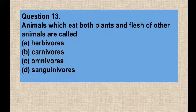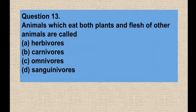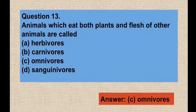Question number thirteen: Animals which eat both plants and flesh of other animals are called — option A herbivores, option B carnivores, option C omnivores, option D sanguivores. Animals that can eat both plants and flesh — option C is the correct answer, that is omnivores.